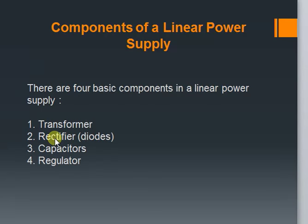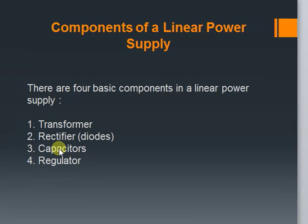The second element is the rectifier. It may be a center-tapped or a bridge rectifier depending on the requirement. Nowadays ready-made rectifier ICs are also available. This rectifier converts the input sine wave into a pulsating DC wave. Now this wave is applied to the filter capacitors. The capacitor is used to smoothen the waveform and reduce the ripple from it.